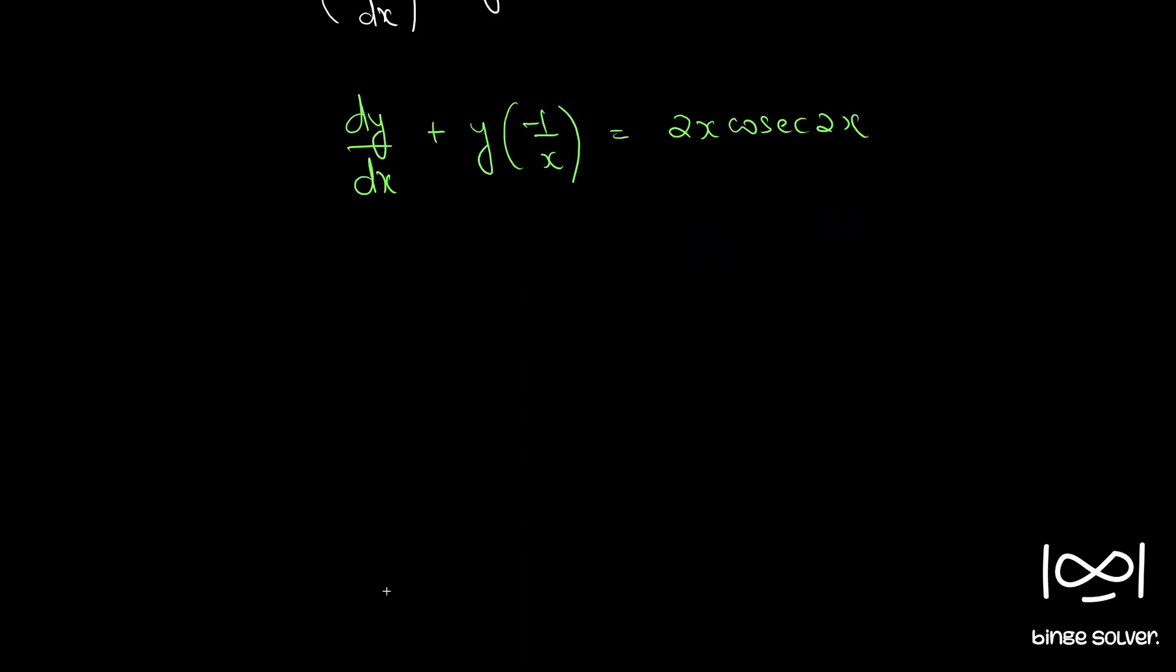So this is in the standard form of a linear differential equation, with the standard form being dy by dx plus py equal to q. P and q should be functions of x alone or constants. Here p is equal to minus 1 by x and q equal to 2x cosec 2x. Both are functions of x alone.